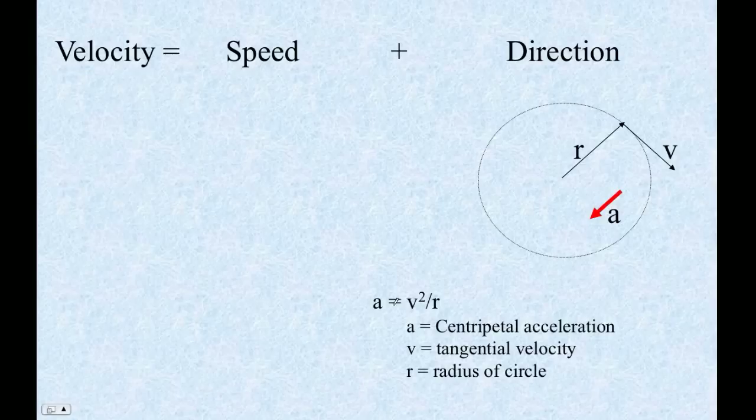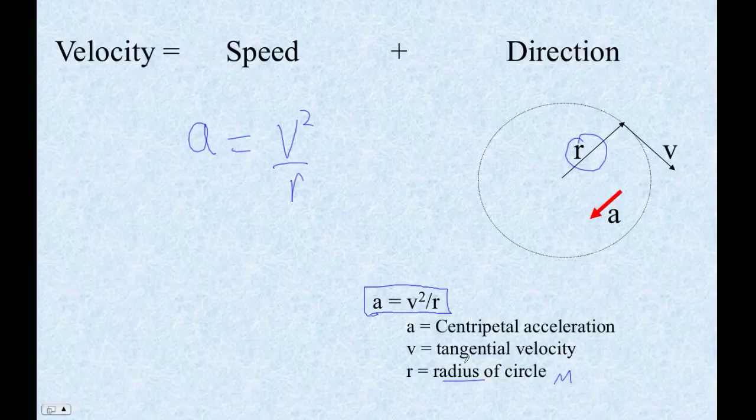So you can derive this formula if you have calculus, and if you don't have calculus, you can just confuse people trying to derive it with algebra. But there it is. The formula for centripetal acceleration is a equals v squared divided by r. r is the radius of your circle. v is the tangential velocity in meters per second. And a is the centripetal acceleration.